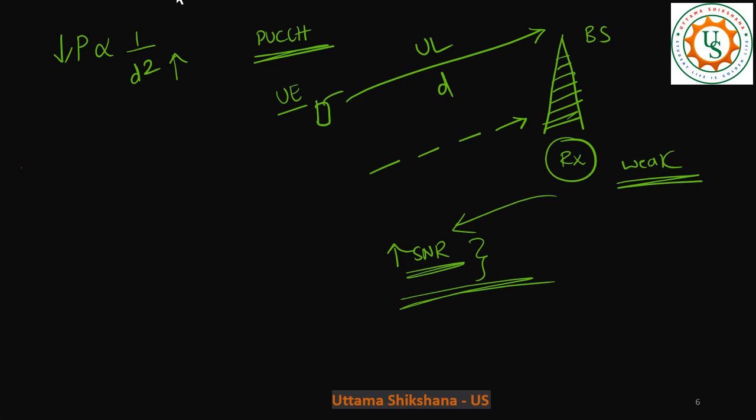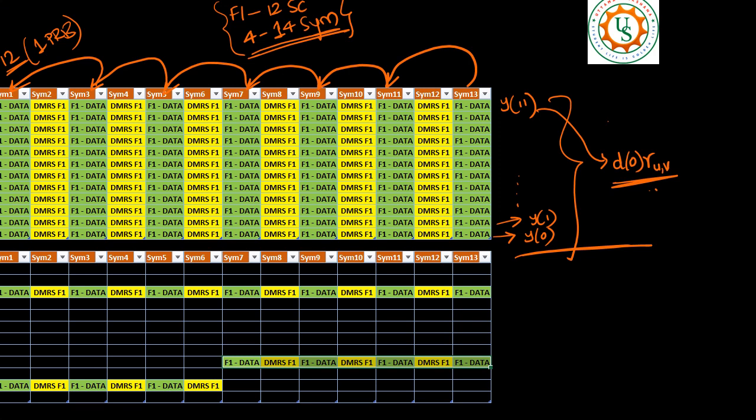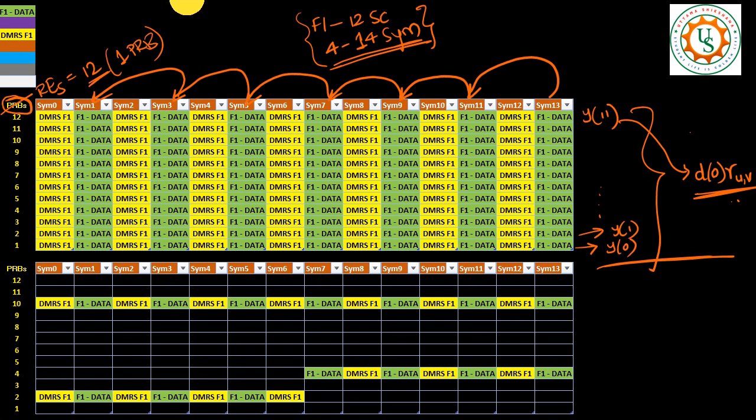For that, based on my earlier explanation in earlier videos, I will get into the concept of this OFDM grid, where I was talking about the allocation of data and DMRS for PUCCH format 1. Format 1 occupies 12 subcarriers and its number of symbols can be anything from 4 to 14. I have taken the maximum, which is 14 symbols.